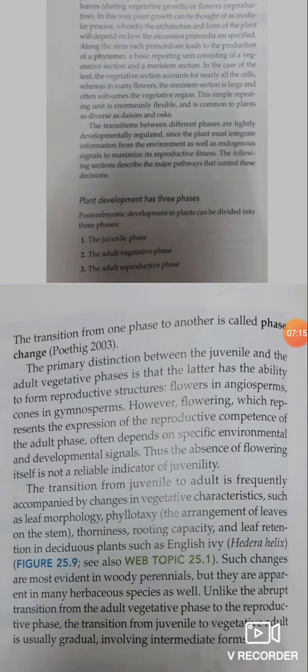The transition from one phase to another is called phase change. The primary distinction between the juvenile and adult vegetative phase is that the latter has the ability to form reproductive structures — flowering in angiosperms and cones in gymnosperms. However, flowering, which represents the expression of reproductive competence of the adult phase, often depends on specific environmental and developmental signals. Thus, the absence of flowering itself is not a reliable indicator of juvenility.